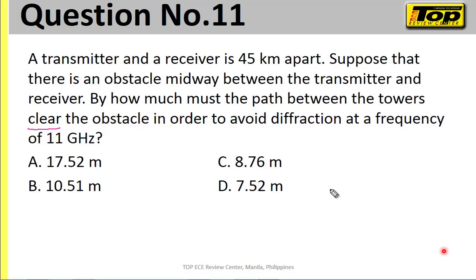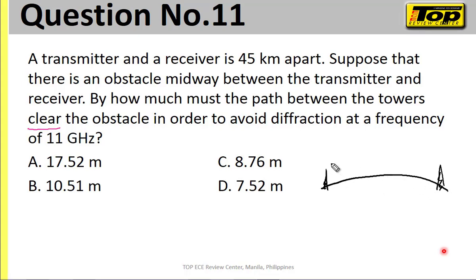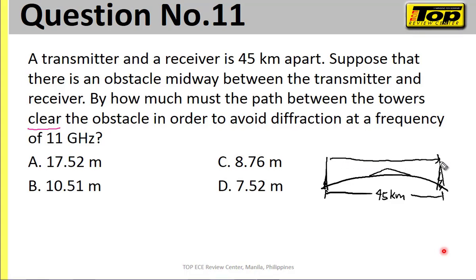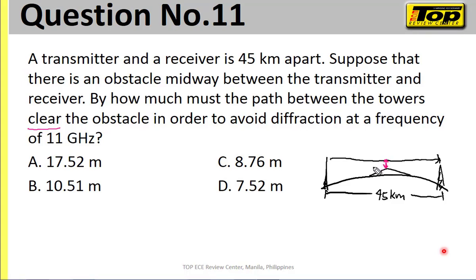So let us say, as stated in the problem, we have a transmitter and a receiver. This is 45 kilometers apart from each other, and there's an obstacle midway. The question asks: how large is the clearance when we beam from the transmitter to the receiver — how large is our clearance at the obstacle? We are also given the operating frequency of 11 gigahertz.